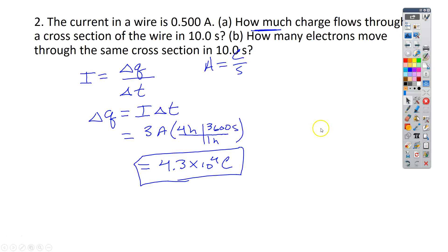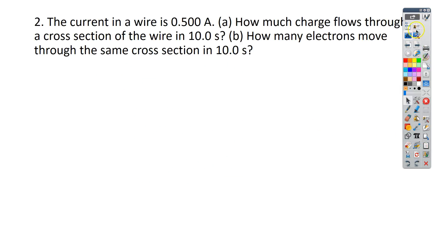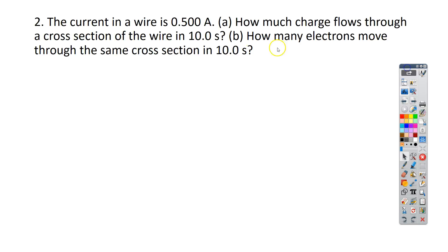For problem number 2, this one says the current in a wire is 0.5 amps. How much charge flows through the cross-section of the wire in 10 seconds? And then they want to know how many electrons move through that same cross-section in that same 10 seconds.